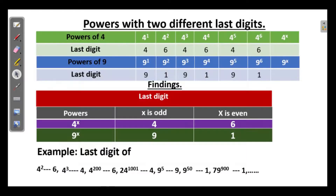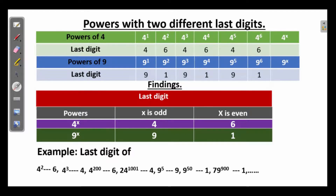Powers with 2 different last digits. We have already seen powers of 4: the pattern is 4, 6, 4, 6, 4, 6. And powers of 9: the pattern is 9, 1, 9, 1, etc. The finding: if the power of 4 is odd — that is 4 raised to 1, 4 raised to 3, 4 raised to 5, 4 raised to 7, etc. — the last digit is 4. And if the power is even — 4 squared, 4 raised to 4, 4 raised to 6, etc. — the last digit is 6. Similarly, the last digit of any power of 9 can also be determined just by seeing whether the power is odd or even. Some examples are also given here.